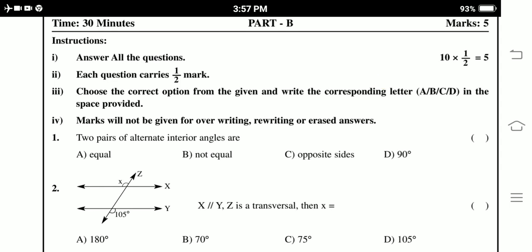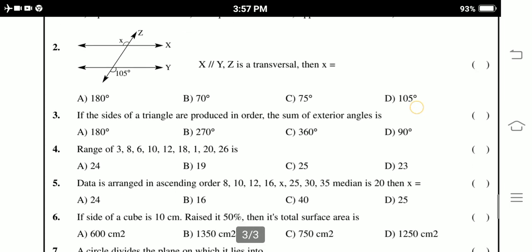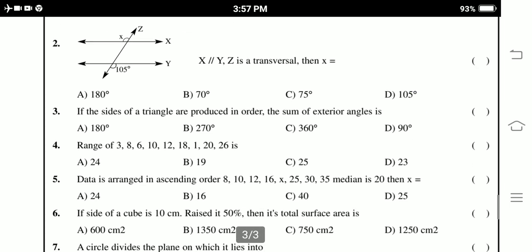2 pairs of alternate interior angles are. If the sides of the triangle are produced in order, the sum of the exterior angles is. Range of 3, 8, 6, 10, 12, 18, 120, 20, 60 is.